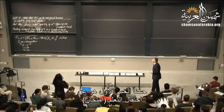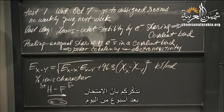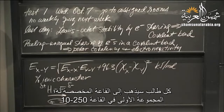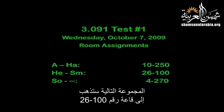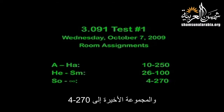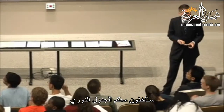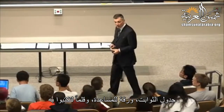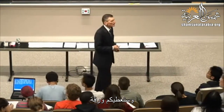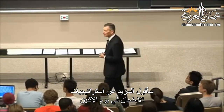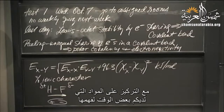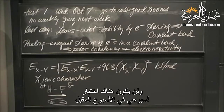First announcement: reminder of the exam a week from today. Go to your assigned rooms. A through HA will write in here. This group will go into 26-100, and the last group to 4-270. You will take with you your periodic table, table of constants, aid sheet, something to write with. We'll give you paper — you'll write on the exam paper itself. I'll say more about test-taking strategies on Monday. Coverage will be right up through Monday, with emphasis on material you've had time to digest. There will be no weekly quiz next week.